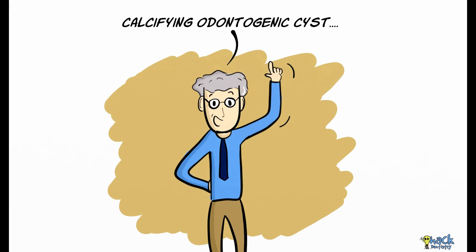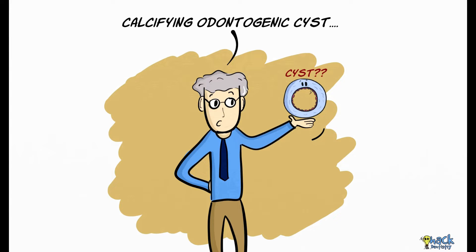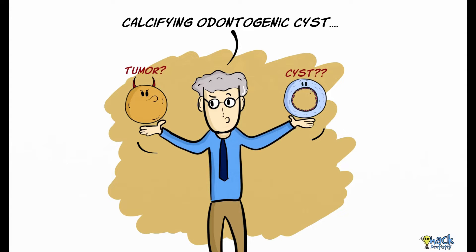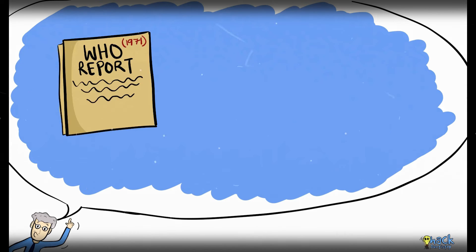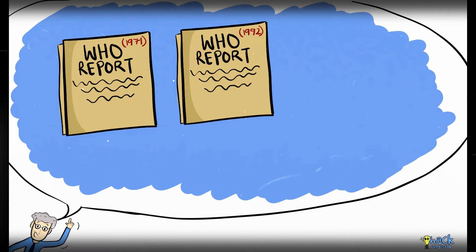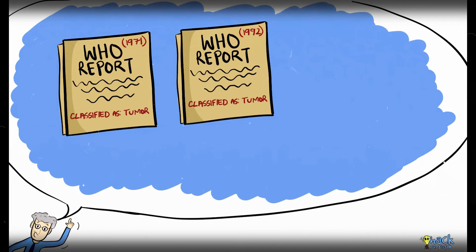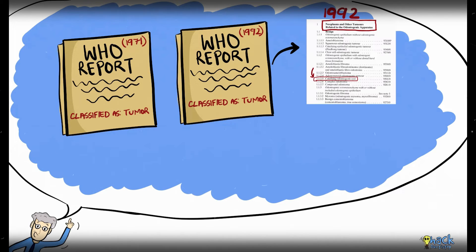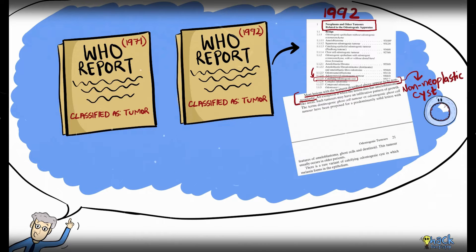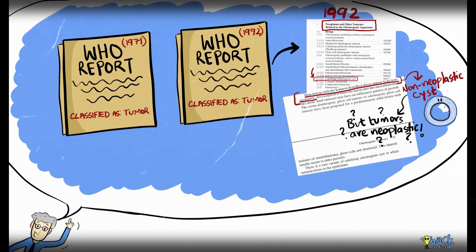So is Calcifying Odontogenic Cyst an odontogenic cyst or a tumor? The 1971 and the 1992 WHO reports classified this lesion under the odontogenic tumor category. Interestingly, though classified as a tumor, the report described the lesion to be a non-neoplastic cystic lesion, fueling further confusion.